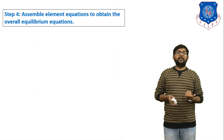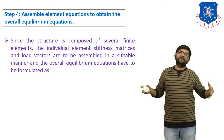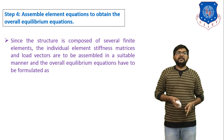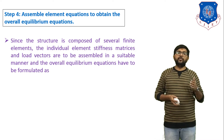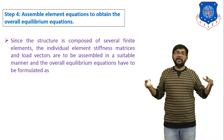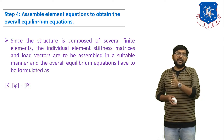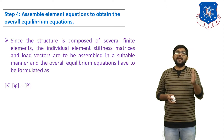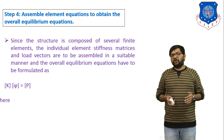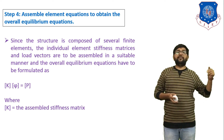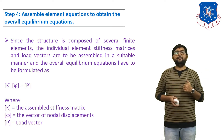Step number four: assemble element equations to obtain the overall equilibrium equation. We have to combine all element stiffness matrices — this is called the global stiffness matrix. Since the structure is composed of several finite elements, the individual element stiffness matrices and load vectors have to be assembled in a suitable manner. The overall equilibrium equation is formatted as KΦ equals P, where K is the global stiffness matrix, Φ indicates the displacement at each node, and P indicates the load at each node.